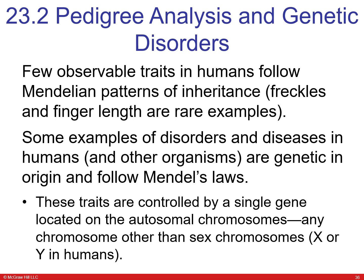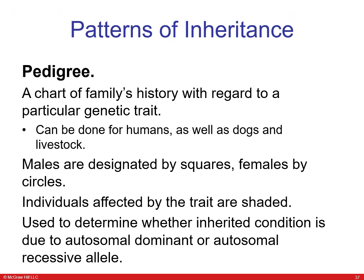There are observable traits in humans that follow Mendelian patterns, including diseases, controlled by a single gene on an autosomal chromosome — any chromosome other than the sex chromosomes X and Y. A pedigree is a chart of a family's history regarding a particular genetic trait, used for humans as well as dogs, fish, and livestock. Males are represented by squares, females by circles, and affected individuals are often shaded.